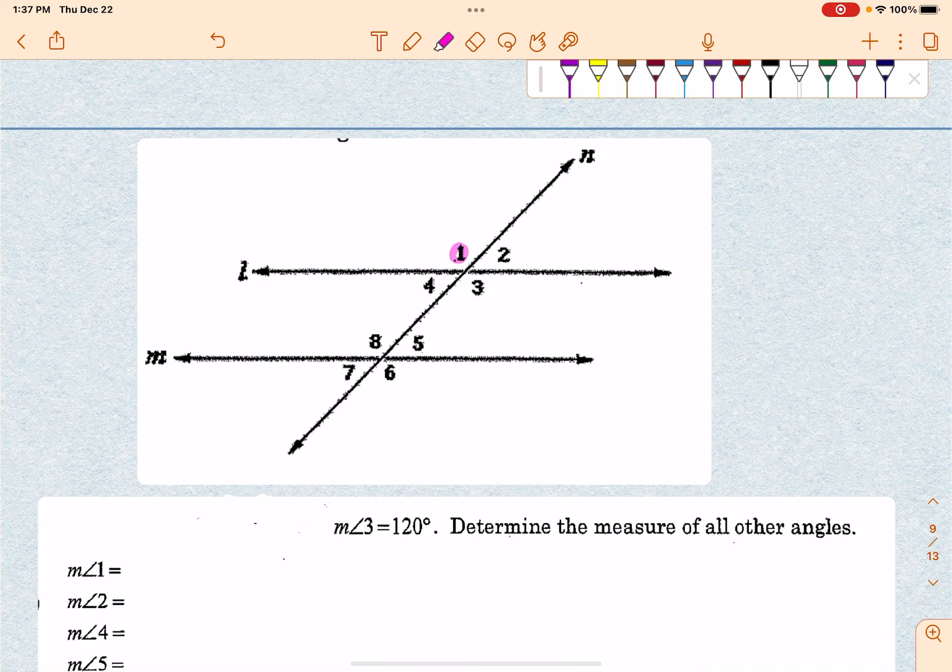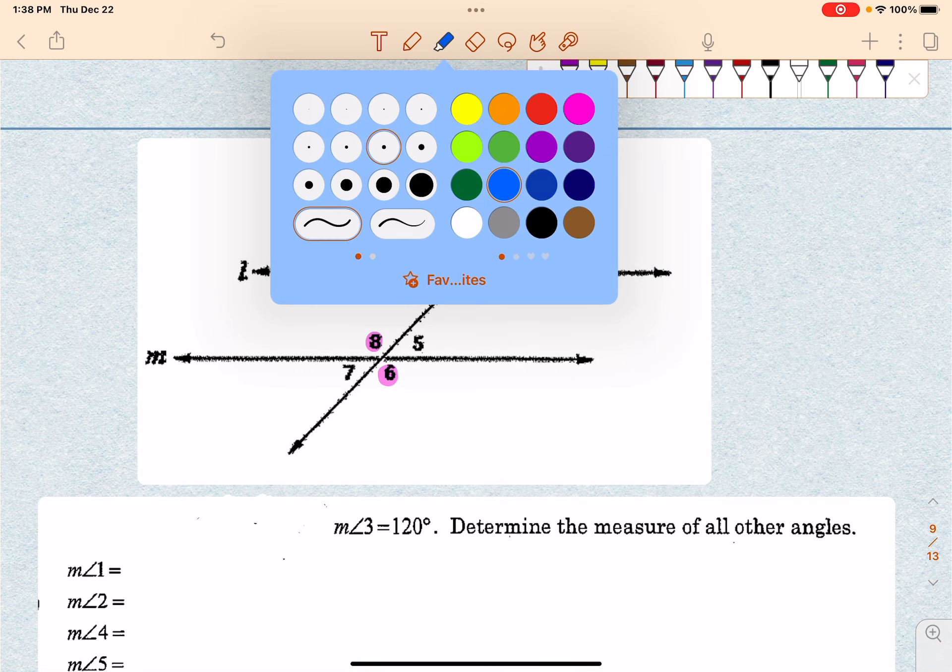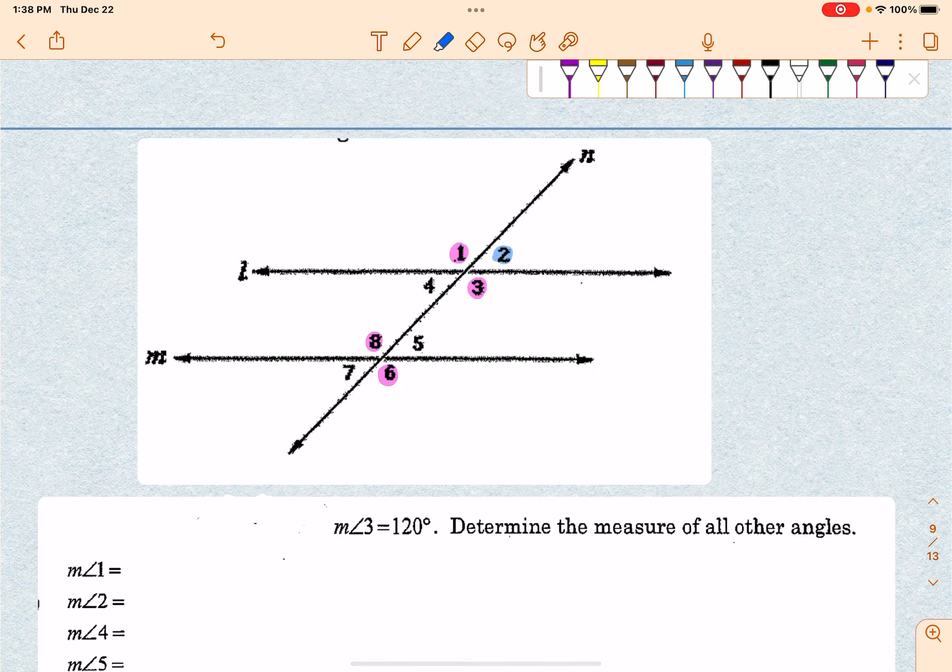Now that means 1 and 3 are going to be equal because they're vertical angles. 3 and 8 are going to be equal because they're alternate interior angles. And 8 and 6 are going to be equal because they're vertical angles. Now that means in the same way, the other 4 are going to be equal. So it is helpful to do that once you're trying to solve these.